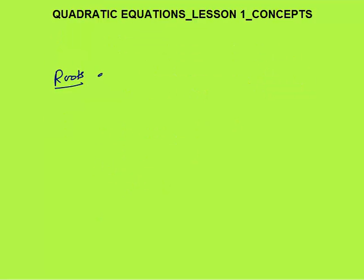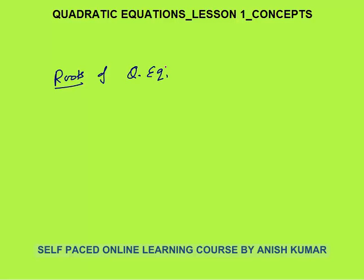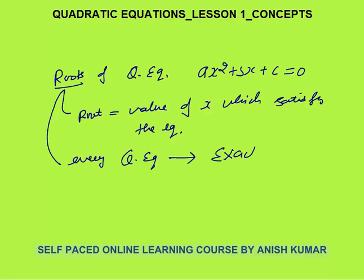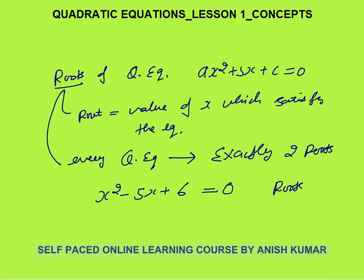Next is roots of quadratic equation. For the general equation ax² + bx + c = 0, root means the value of x which satisfies the equation. Every quadratic equation has exactly two roots. For example, taking x² - 5x + 6 = 0, its roots are 2 and 3.